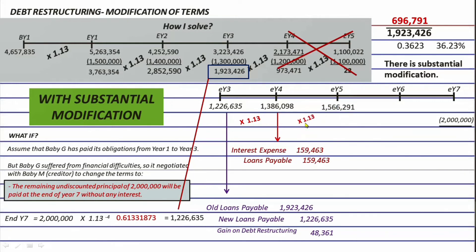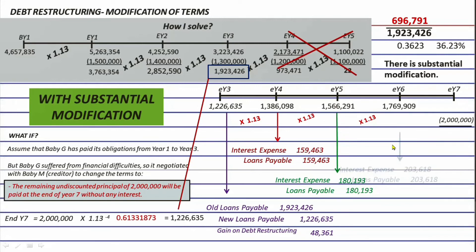1,386,098 times 1.13 equals 1,566,291. The difference of 180,193 is recorded as debit interest expense and credit loans payable. Next, 1,566,291 times 1.13 equals 1,769,909, and the difference of 203,618 is again debited to interest expense and credited to loans payable.